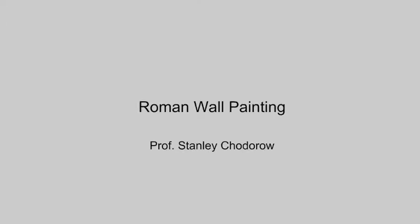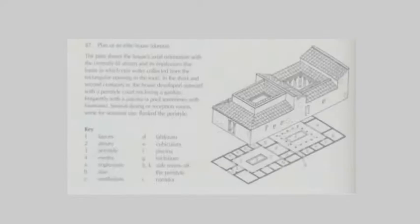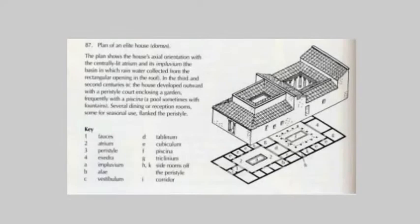In this series we're going to look at wall paintings from elite houses, and it might be useful to start with a drawing of how such a house was built and organized. This is a plan from Yves D'Ambra's book Roman Art, showing a plan organized around two courtyards.